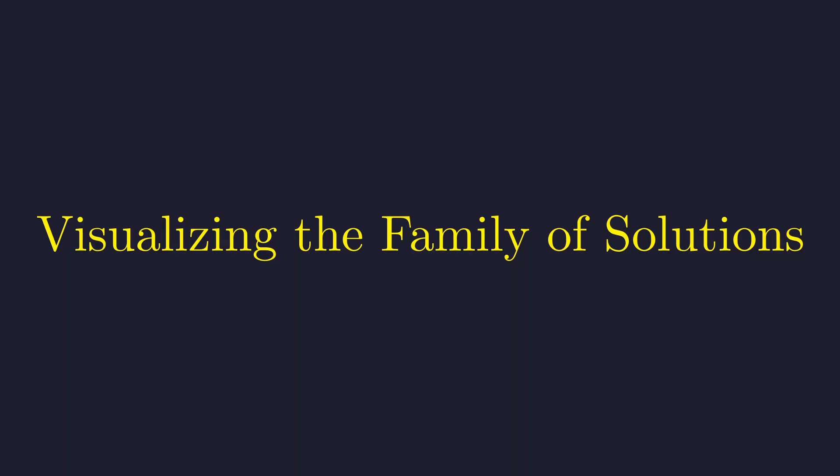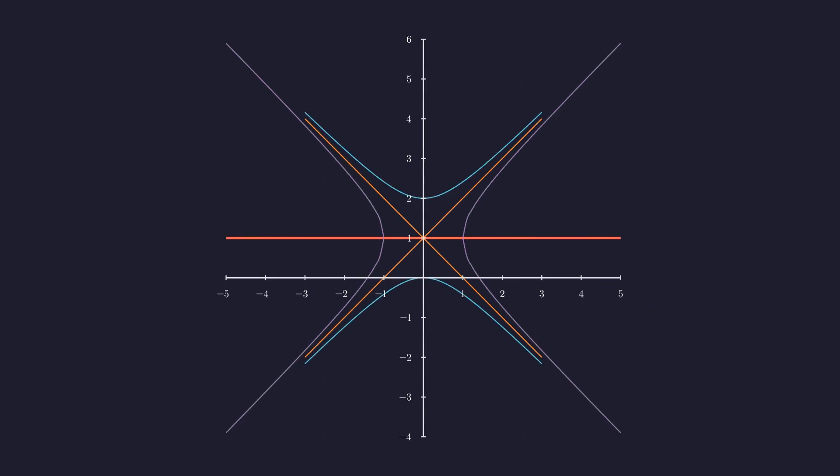Let's visualize the three distinct families of curves based on the sign of c. We will plot our solutions on the coordinate plane. The solutions form three distinct families. For c greater than 0, we get blue hyperbolas that open up and down. For c equals 0, we get two orange lines. And for c less than 0, we get purple hyperbolas that open left and right.